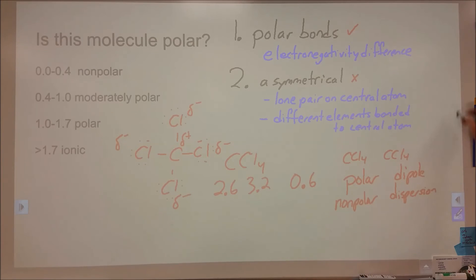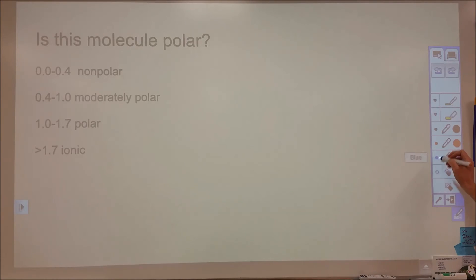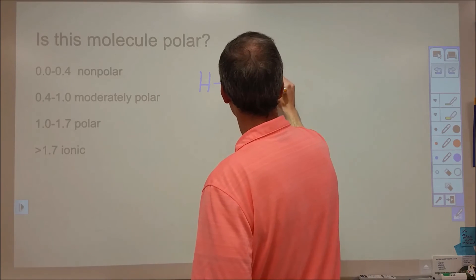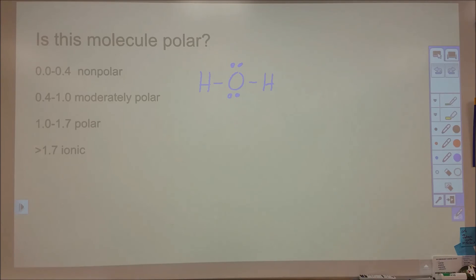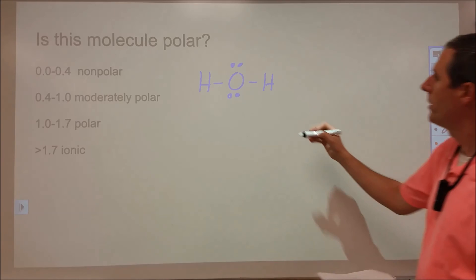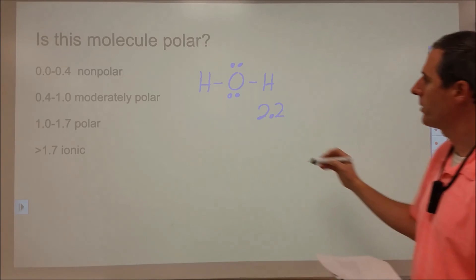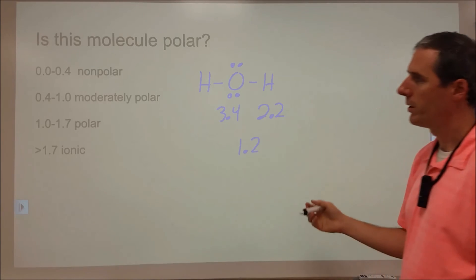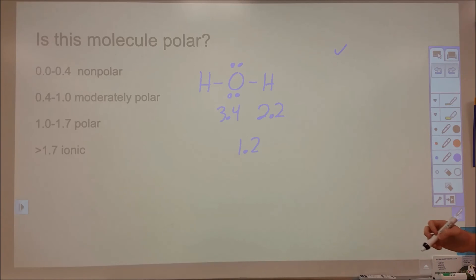So let's do one more example here. So for something like water, we have a hydrogen, which has an electronegativity of 2.2, and oxygen, which has an electronegativity of 3.4. So the difference there is 1.2. So we would say on our scale that this is definitely polar. So yes to number one. We have polar bonds.